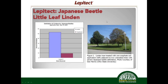Japanese beetle on little leaf linden — this can be a huge issue anywhere lindens are planted. Looking at percent defoliation of lindens by Japanese beetle: application date is June 12th, data reported August 17th. One soil treatment with Lepitech shows less than 10% defoliation on treated trees versus over 50-55% defoliation on untreated trees.